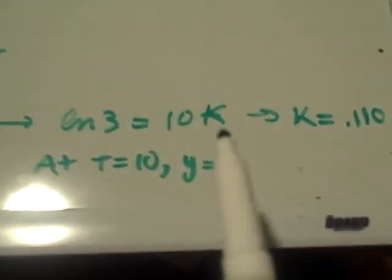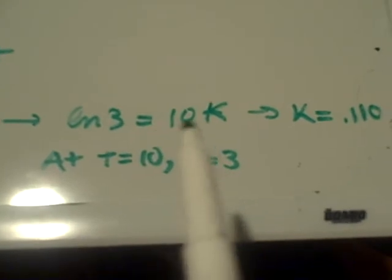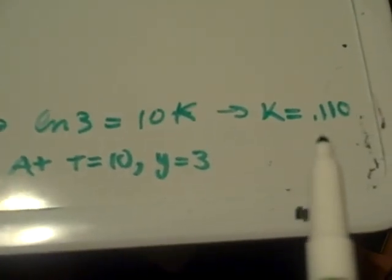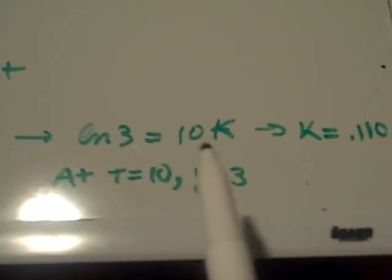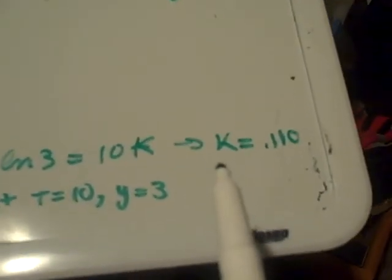So that's basically how you get the numbers for this equation. ln of 3 equals 10k. When you solve that out, you're going to get k equals 0.110. And you're solving for k. You just get the ln of 3 and you divide by 10. Voila, you have k equals 0.110.